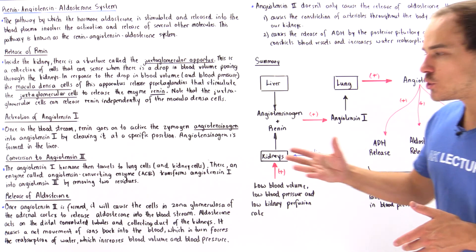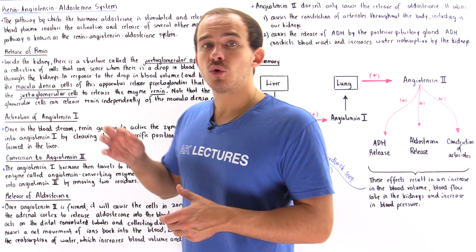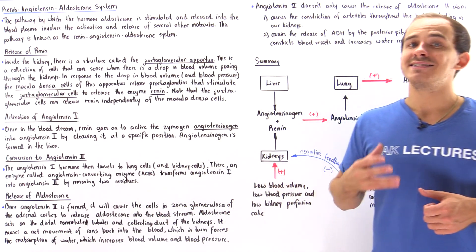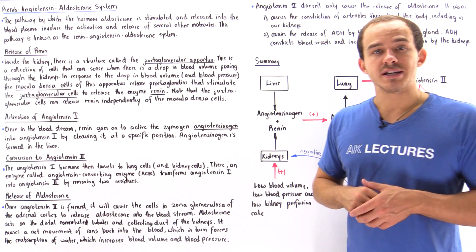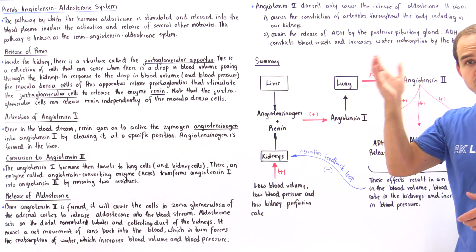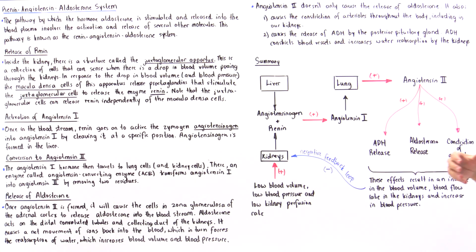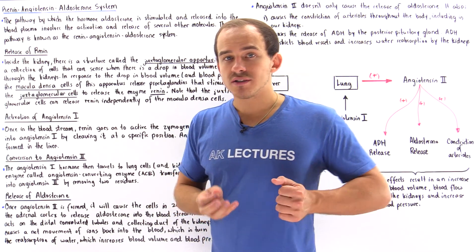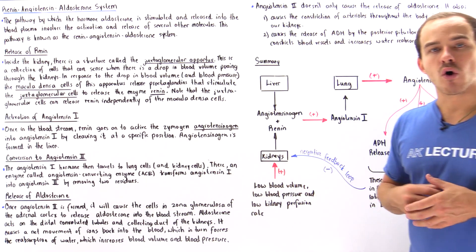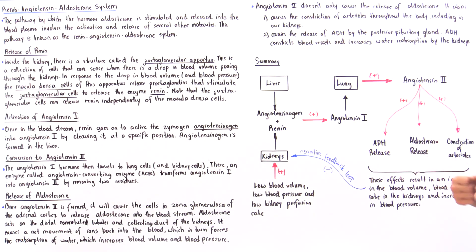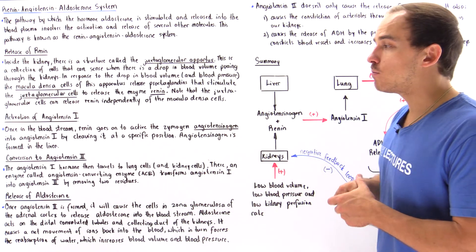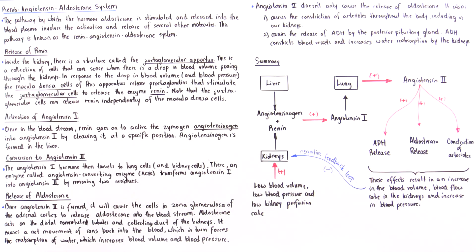Angiotensin II also stimulates the release of anti-diuretic hormone, ADH — also known as vasopressin — stored in the posterior pituitary gland and produced by the hypothalamus. ADH causes our kidneys to reabsorb more water by making the cell membrane more permeable to water, increasing water in our blood plasma and raising blood pressure.